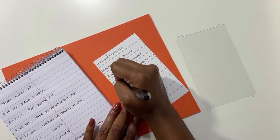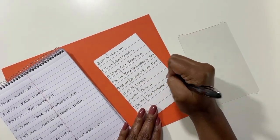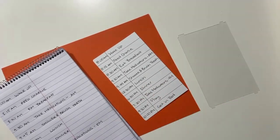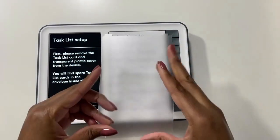I did all ten slots, but you don't have to. Also, there's only four extra task lists, so be careful not to mess up. Then we'll replace the task list followed by the plastic cover.